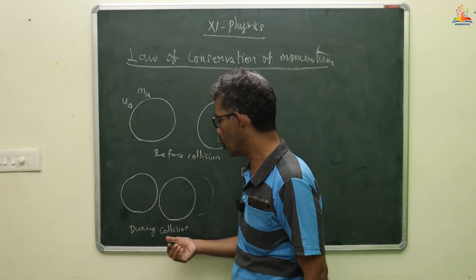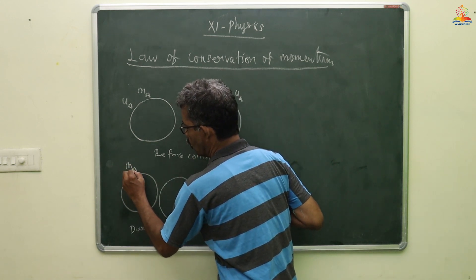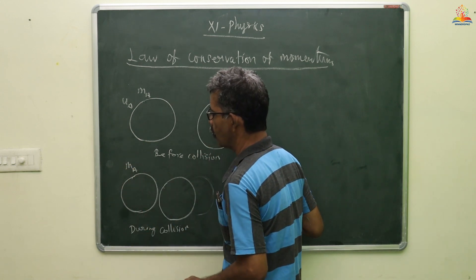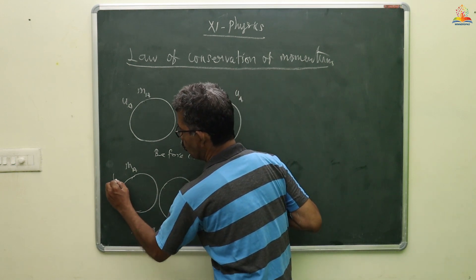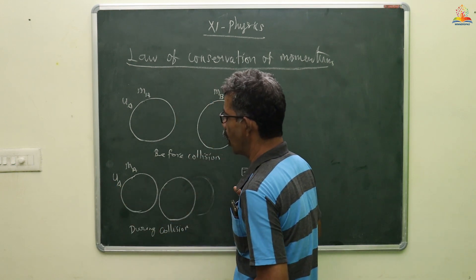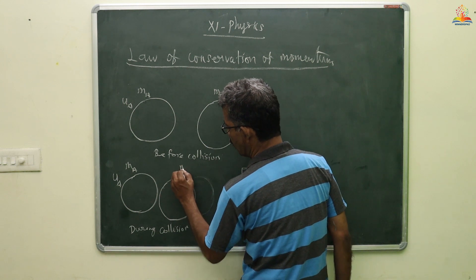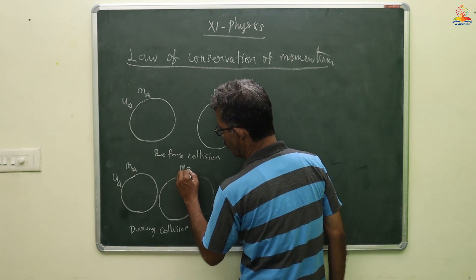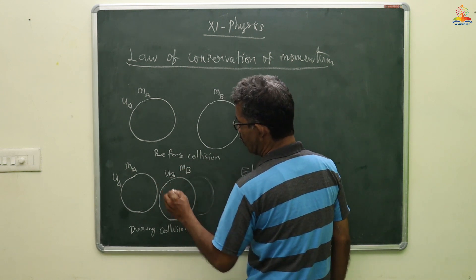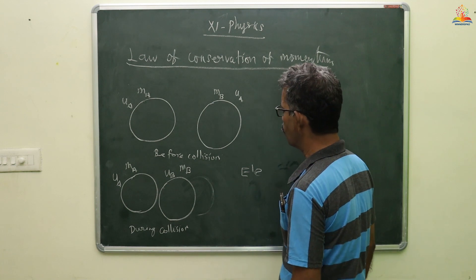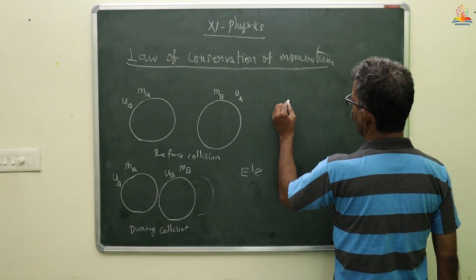From this point of view, during collision: M_A is the mass of object A, U_A is the initial velocity of object A, M_B is the mass of object B, and U_B is the initial velocity of object B.